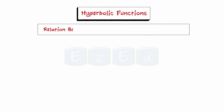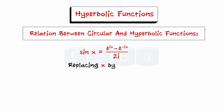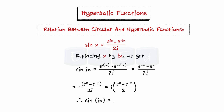Are circular and hyperbolic functions related? We know sin x = (e^(ix) − e^(−ix)) / 2i. Replacing x by ix and simplifying, we get sin(ix) = i·sinh(x).